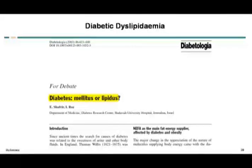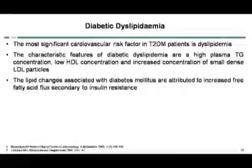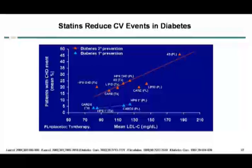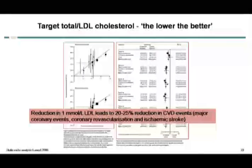Regarding lipids — the most significant cardiovascular risk factor in type 2 diabetes is dyslipidemia. The characteristic features of diabetic dyslipidemia are high plasma triglyceride concentration, low HDL concentration, and increased concentration of small dense LDL particles. The lipid changes associated with diabetes mellitus are attributed to increased free fatty acid flux secondary to insulin resistance. Statins reduce cardiovascular events by improving lipids. As shown in the 4S study, a reduction of 1 mmol/L of LDL leads to a 20 to 25% reduction in cardiovascular events in coronary artery disease.